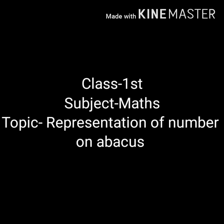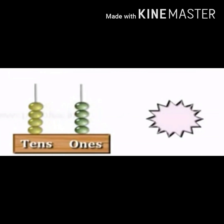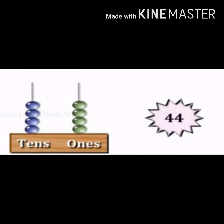Good morning students. Today our topic is representation of number on abacus. In our last video we learned to read number on abacus. Can you tell me which number this abacus is showing? Yes, you are right. Here are four ones and four tens, so this abacus is showing number 44.